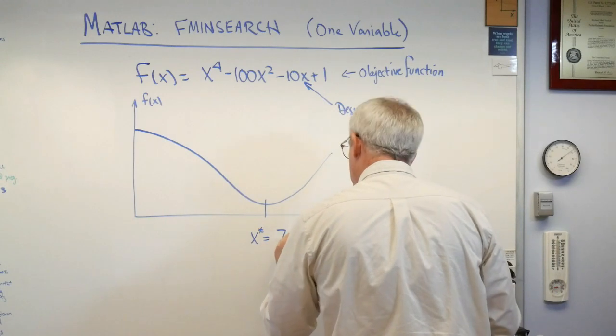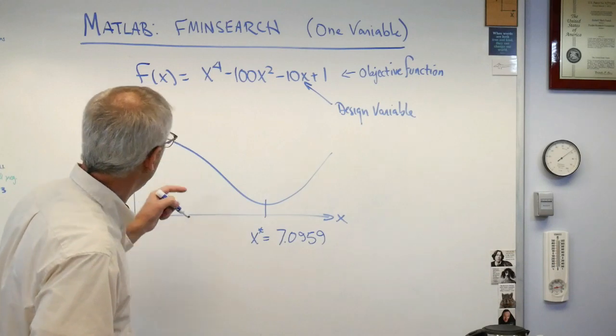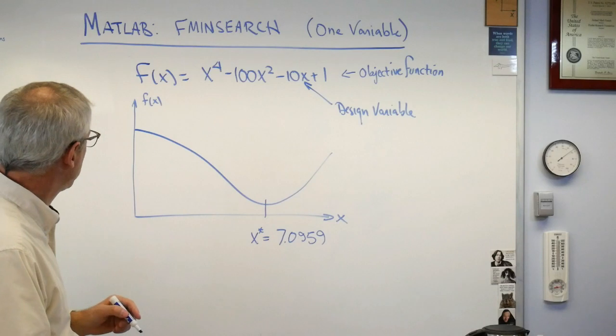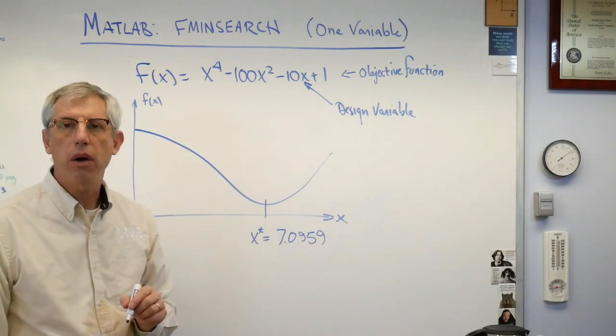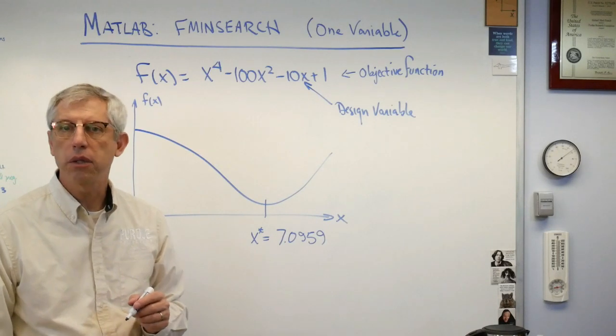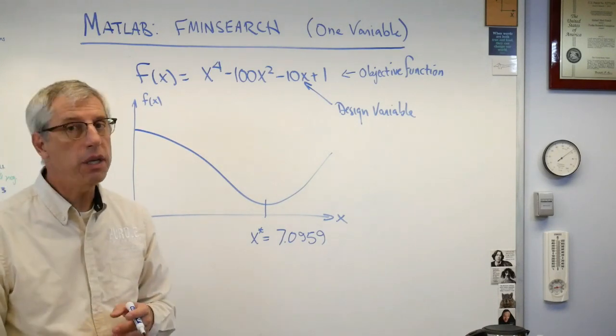7.0959. So there's, we know pretty much what this looks like and we know there's the minimum. So we want fmin search to find that. The one thing about really almost all minimization functions, especially the ones in MATLAB, they need a starting place. You need to tell them where to start. They don't know anything about your problem, so you have to tell them where you want them to start looking.